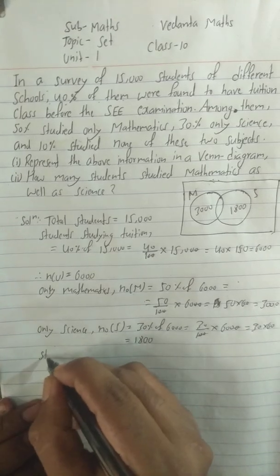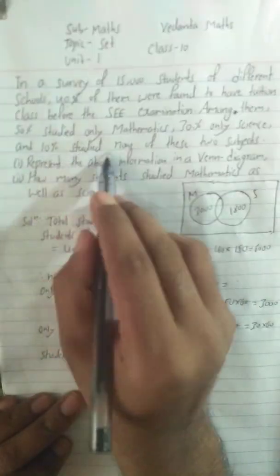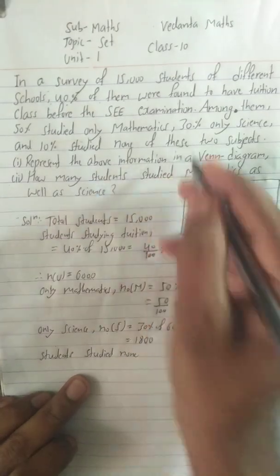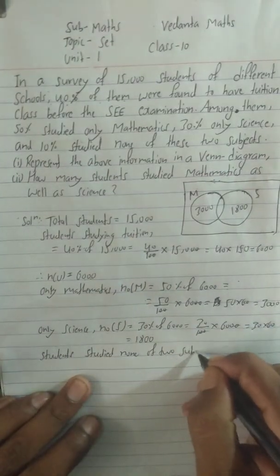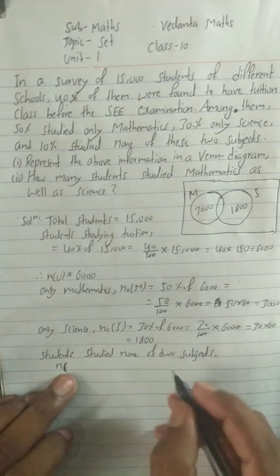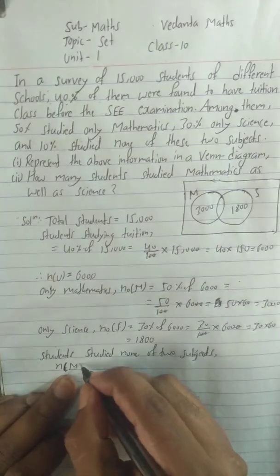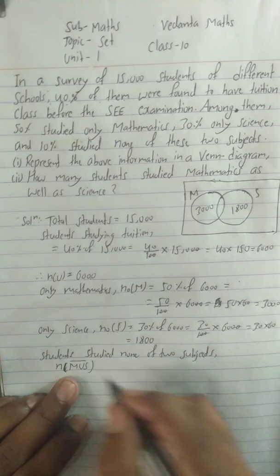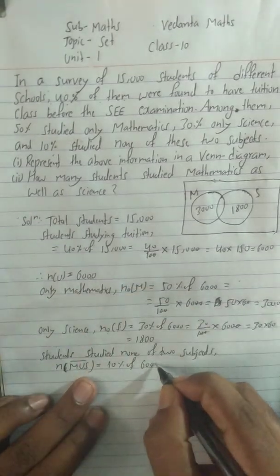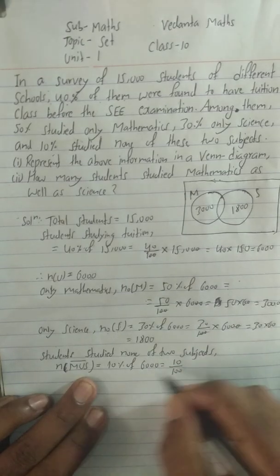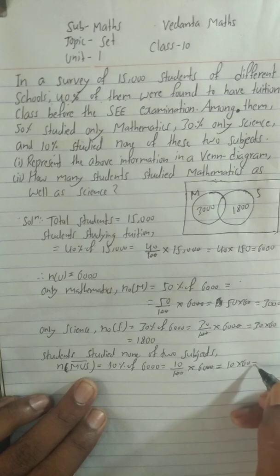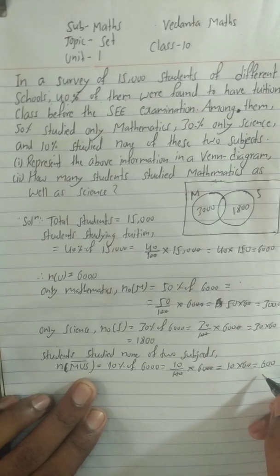Students who studied none of the two subjects: 10% studied none. So n(M ∪ S)' = 10% of 6,000 = 10 divided by 100 multiplied by 6,000. Cancelling: 10 × 60 = 600. So 600 students studied neither subject.